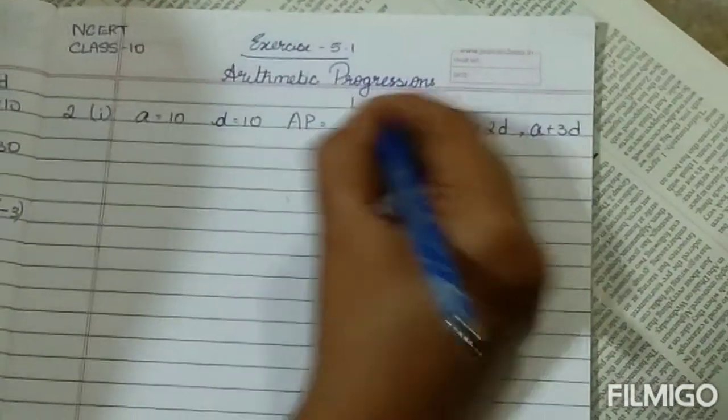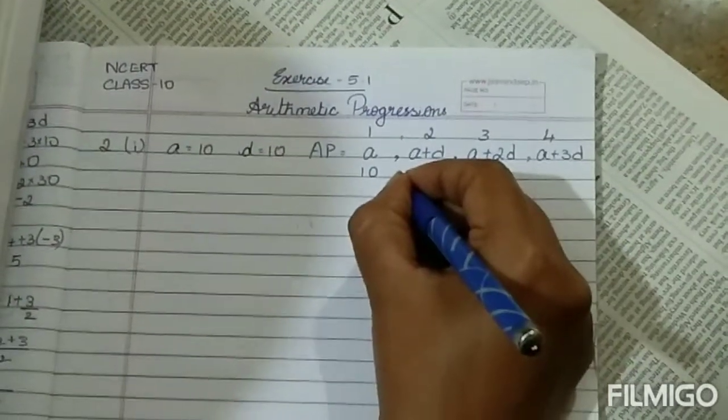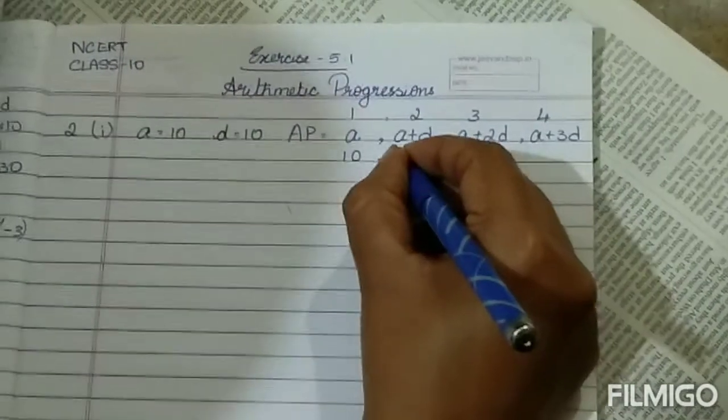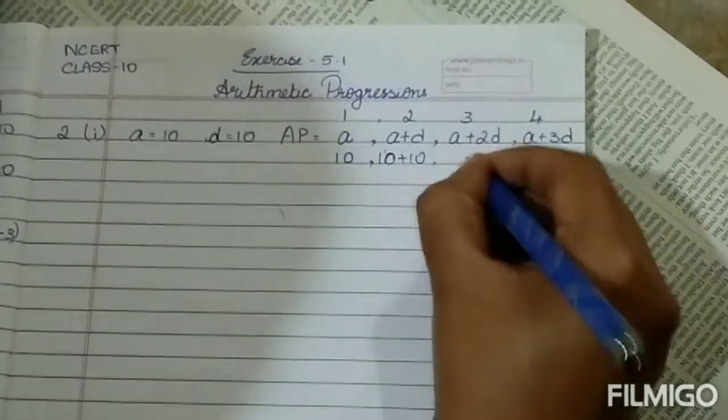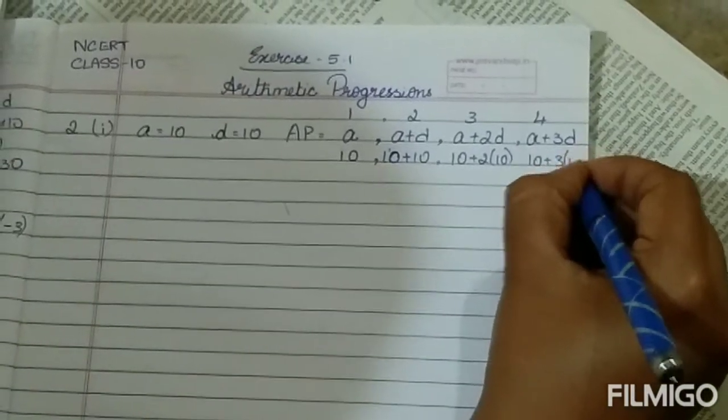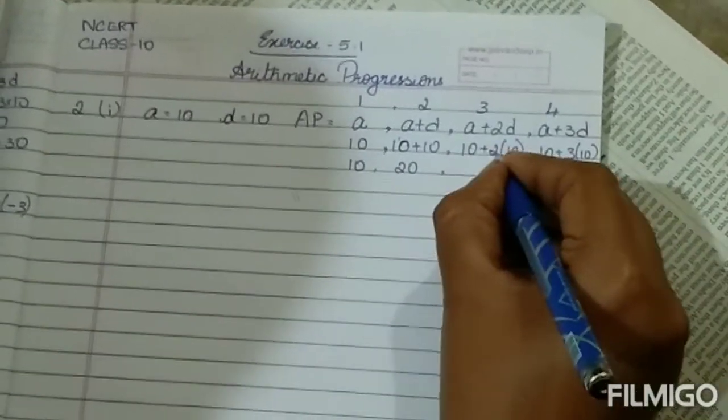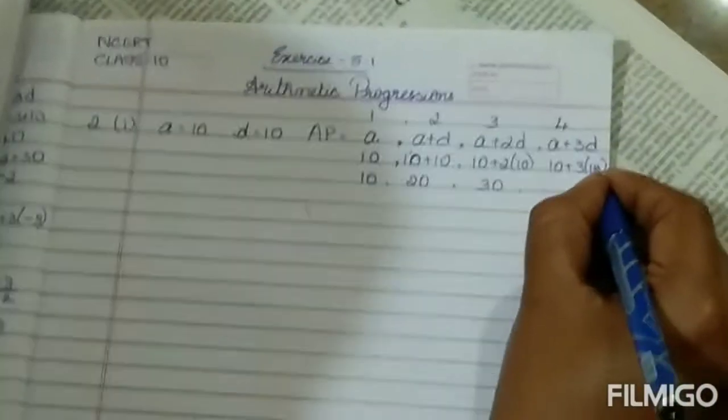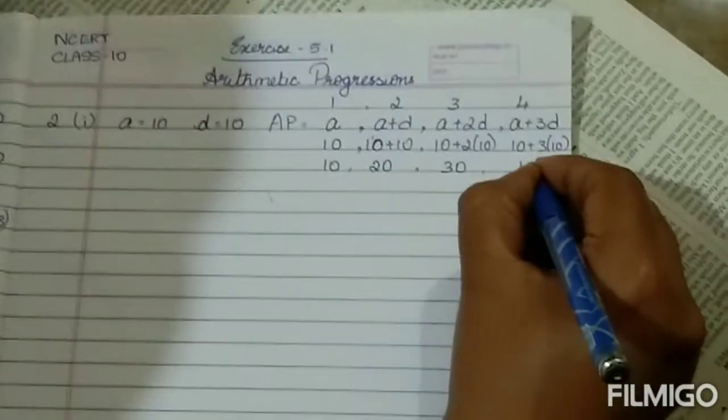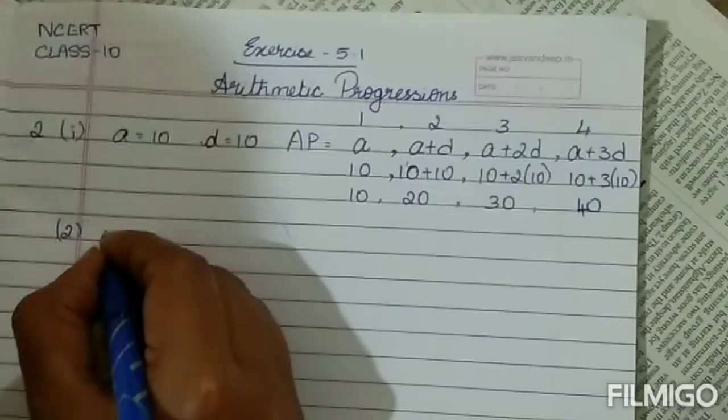What they have asked is the first four terms. You have to find out these four terms, so replace the value in the place of a: 10, 10 plus 10, 10 plus 2 into 10, 10 plus 3 of 10. So 10, 10 plus 10 is 20, 20 plus 10 is 30, 30 plus 10 is 40. Second problem, they have given first